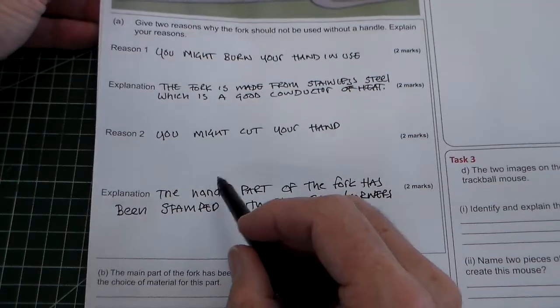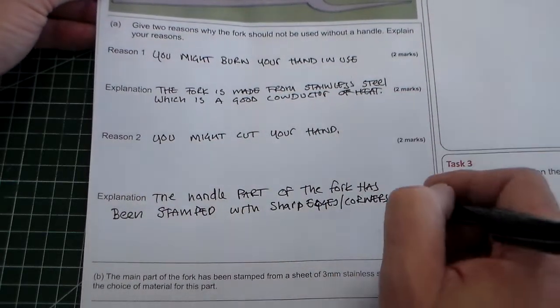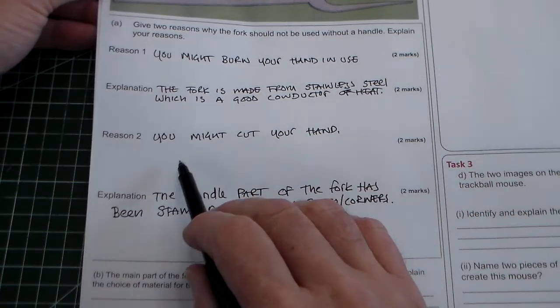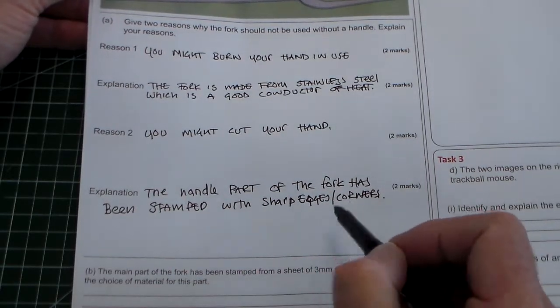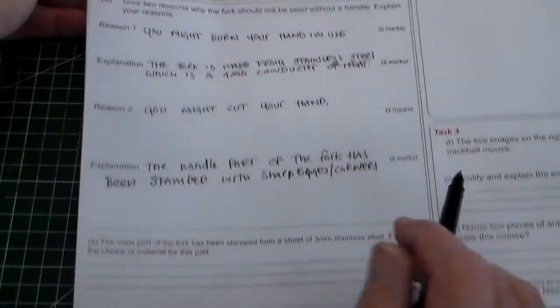See, I'm writing in short sentences, but I am writing in sentences. I'm not just putting single word answers. So reason two: you might cut your hand. Explanation: the handle part of the fork has been stamped with sharp edges or corners.